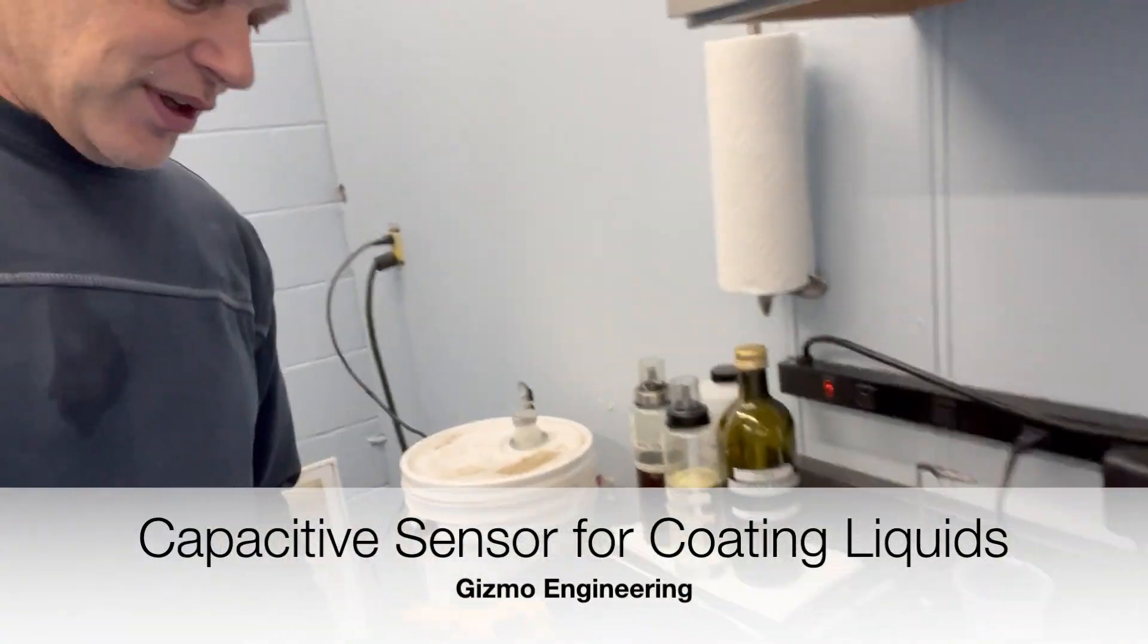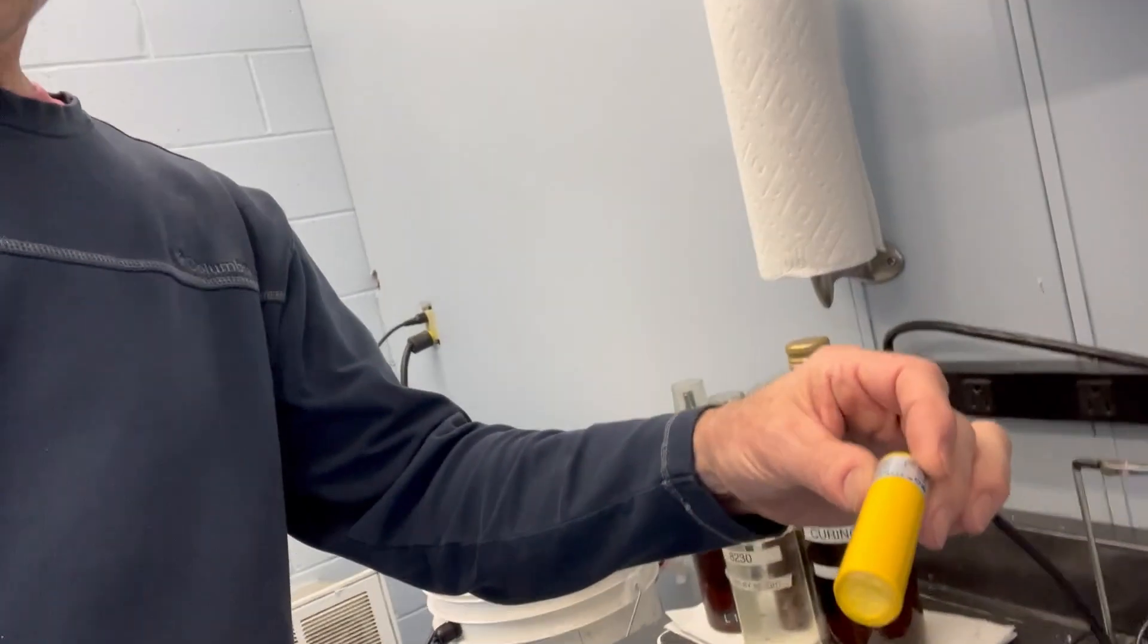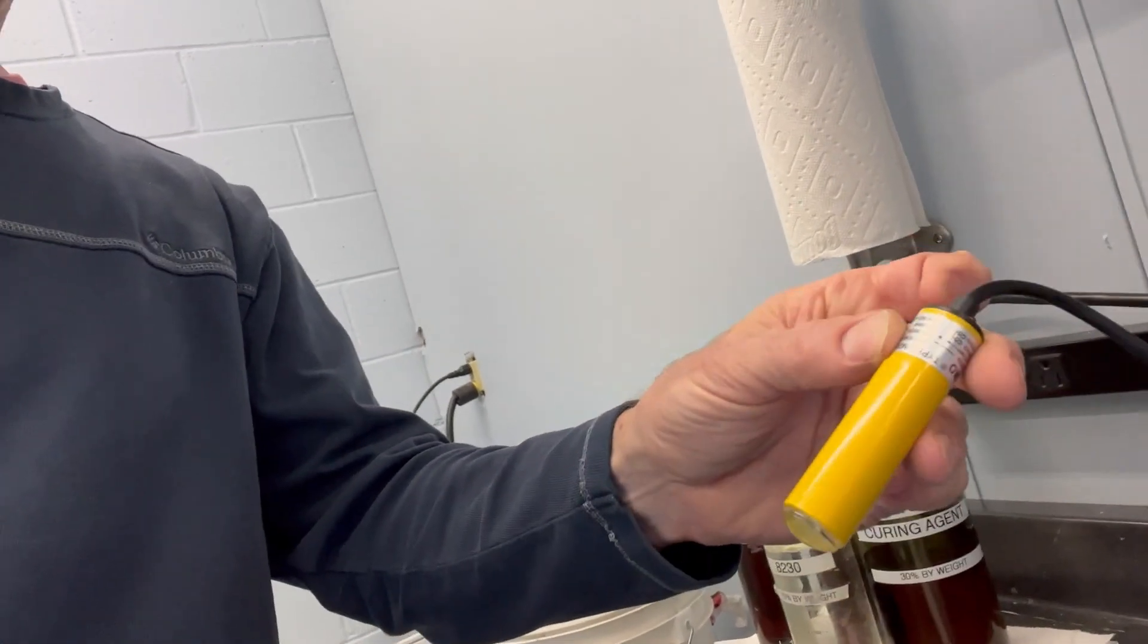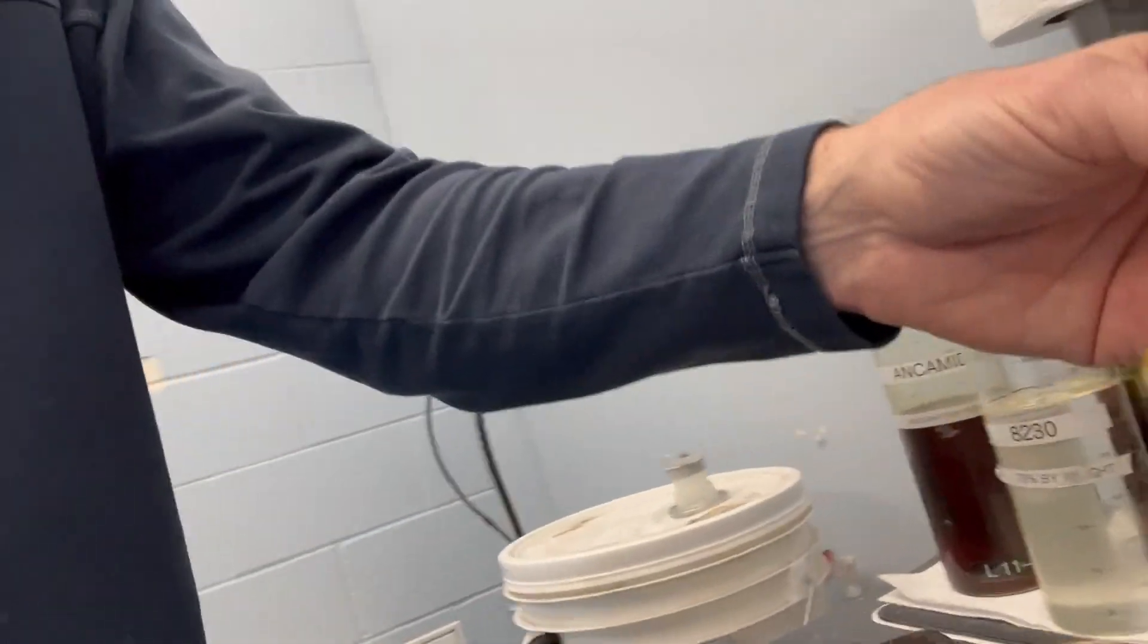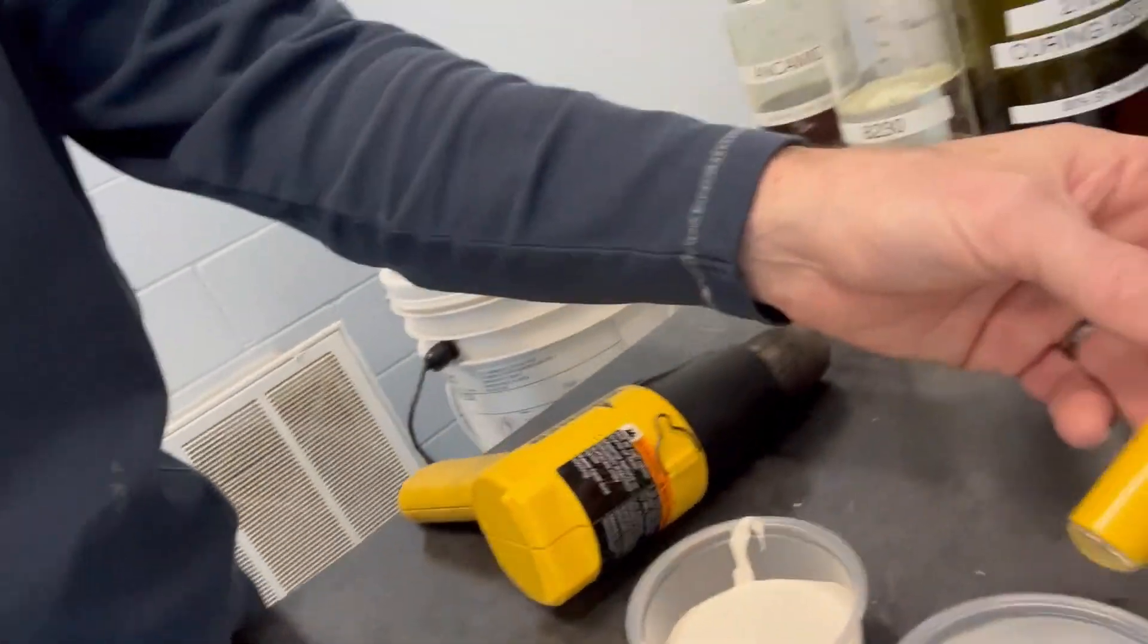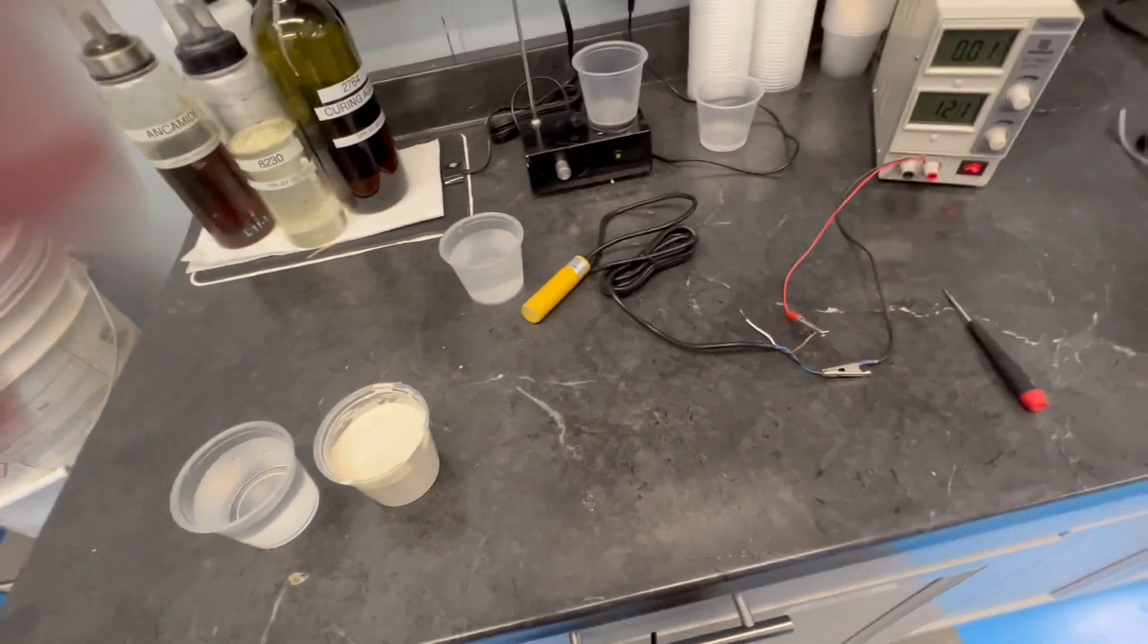Hi everyone, here's the setup for the capacitive sensor and just to demonstrate how it can work in really nasty liquids, really coating liquids like paint types.